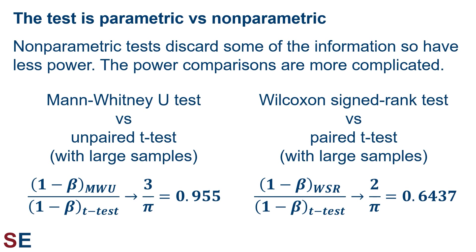For our fourth comparison, we can't easily write out equations because it involves more than just the homoscedastic t-test. Basically, because non-parametric tests discard some of the information in the data, they have less power. The Mann-Whitney-U test is an alternative to the unpaired t-test. For large samples, the power of the Mann-Whitney-U test relative to the two-sample unpaired t-test is 3 divided by pi — about 95% as powerful. The Wilcoxon signed rank test is an alternative to the paired t-test. For large samples, its power relative to the paired t-test is only 2 divided by pi — about 64% as powerful — making it always a poor substitute due to a much higher risk of type 2 error.